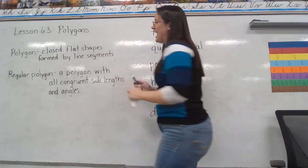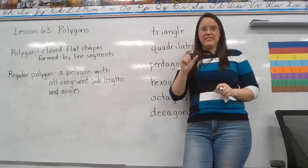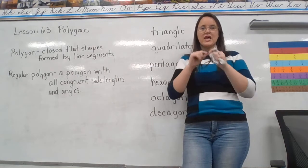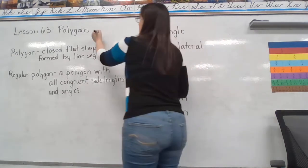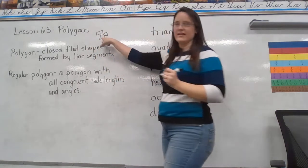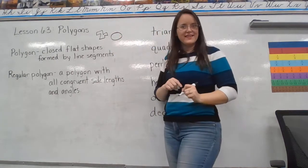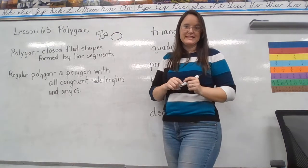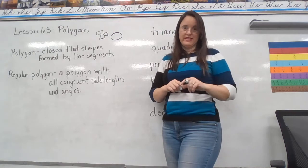They're closed, they're flat, and they're formed by line segments. What's important about that piece of the definition is that a line segment is always straight, not curved. This funny-looking thing is a polygon, but this circle is not a polygon, because it's not made of line segments — it's curved, it's round.